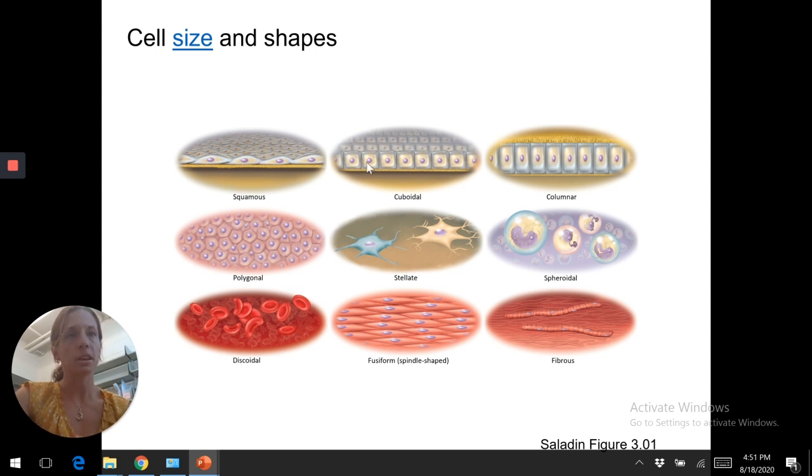These are the various shapes your cells can be. Squamous, cuboidal, columnar. These you'll see quite a bit with the epithelial tissue types. And you'll see all different other shapes as well. These would be red blood cells are discoidal. Fusiform is the muscle cells that are kind of spindle shape for contraction. Smooth muscle are this shape.